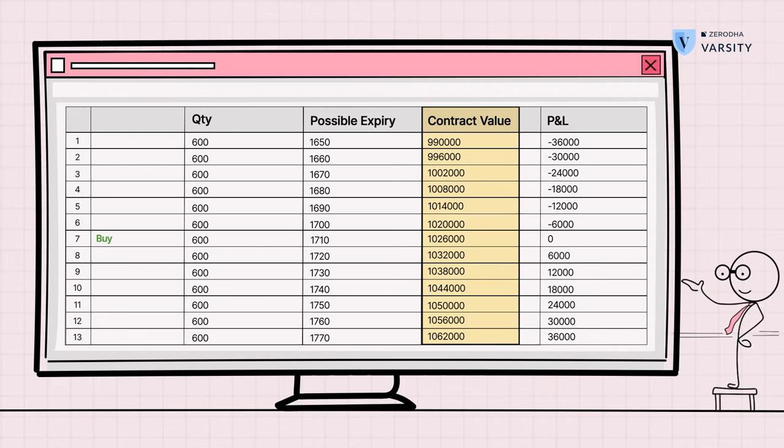And then we have the contract value. Contract value is simply nothing but the quantity multiplied by the current price, which is in the possible expiry column. You'll get the contract value, which also gives us a P&L. Now for a P&L, you need to have a position for a profit and loss. So let's assume we bought 600 shares at 1710.